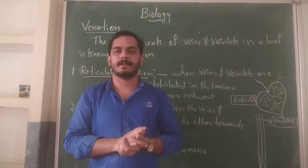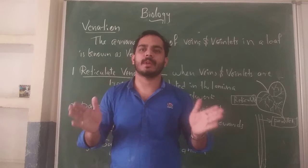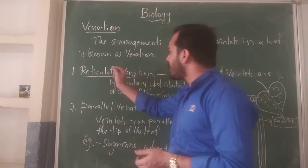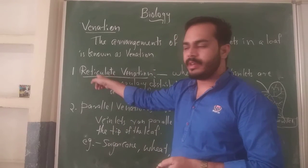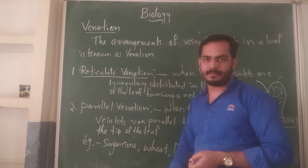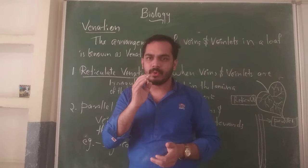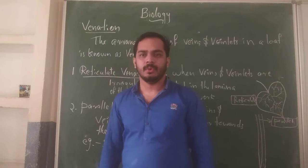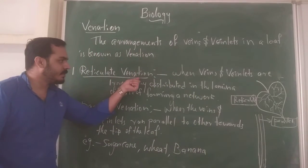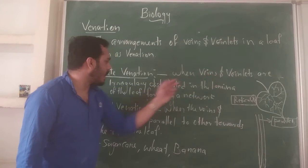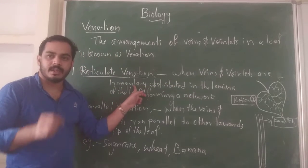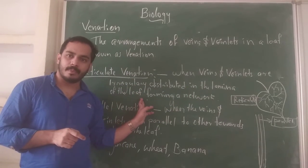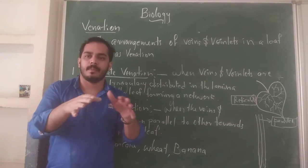According to this, plant leaves are classified into two categories. The first one is reticulate Venation and the second one is parallel Venation. First, we are going to learn what is meant by reticulate Venation and what are its examples. Reticulate Venation means when the veins and veinlets are irregularly distributed in the lamina of the leaf, forming a network.